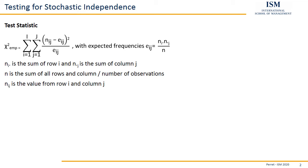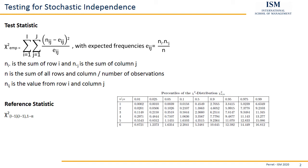Next we need a reference statistic. The reference statistic here is chi-squared with (I−1) times (J−1) degrees of freedom and 1−alpha. Large I is the number of rows in our contingency table, and large J is the number of columns. We subtract one from each and multiply — this gives our degrees of freedom. Then we have 1−alpha, where alpha is the margin of error allowed for our test. We look this up in a corresponding table, where rows represent degrees of freedom and columns represent the 1−alpha values.